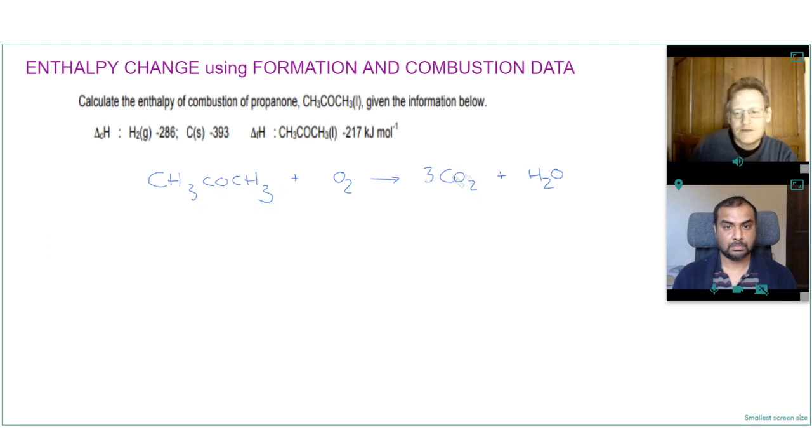Six hydrogens on the left so we'll need three H2O's on the right. And then we've got nine oxygens on the right. And so if we put four oxygens there we'll have nine oxygens on the right. So now we've got the balanced equation we can do our enthalpy cycle.